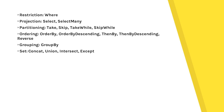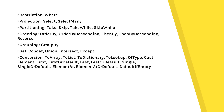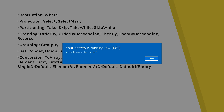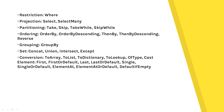Set operators include Concat, Union, Intersect, and Except. Their role is, for example, if you want to merge or concatenate two lists or arrays, you use the set operators. Conversion operators are used when you want to convert data into another object type — for example, converting a string into a character array using the ToArray conversion operator.